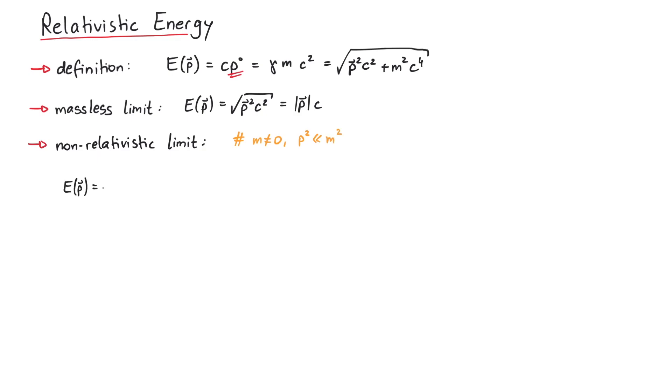In the non-relativistic limit, which means that the particle has mass and is slow, we can write the square root like this and perform a Taylor expansion, since the ratio of momentum over mass is very small. A very useful Taylor expansion to remember is 1 plus x to the power of n, which is 1 plus nx for small values of x.